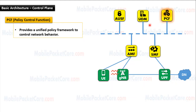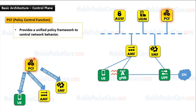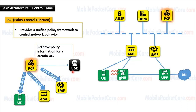Next, let's learn the PCF. PCF refers to Policy Control Function. The PCF provides a unified policy framework to control network behavior. It is responsible to generate and control all policies that control network behavior. It provides the SMF with session management policies, the AMF with access and mobility management policies, and the UE with UE policies. The UDR stores the UE subscribed policy information for all UEs in the network. So the PCF may access the UDR to retrieve policy information for the UE, and then generates all related policies and delivers them to other network functions.